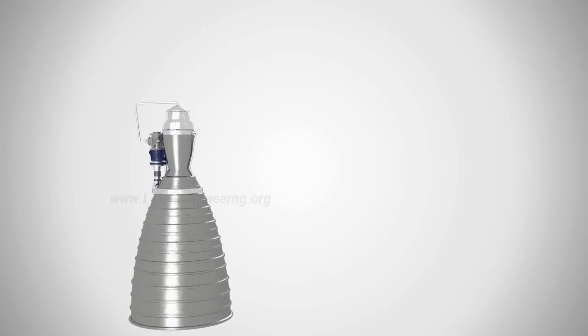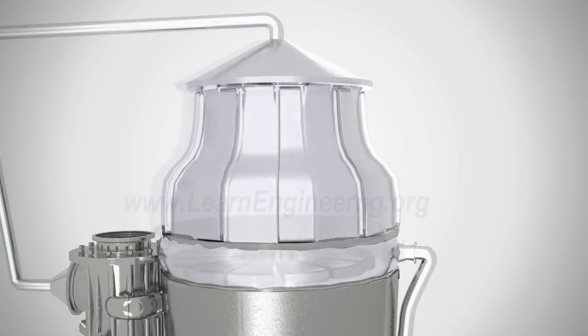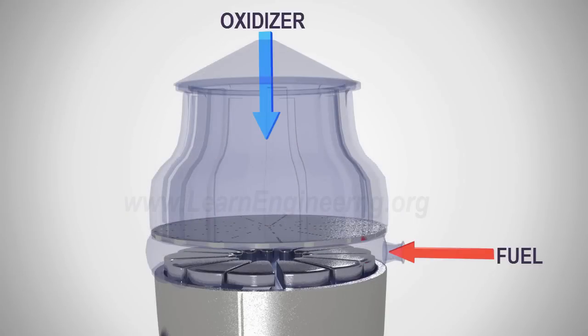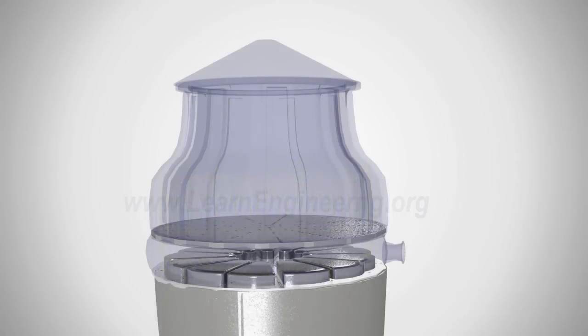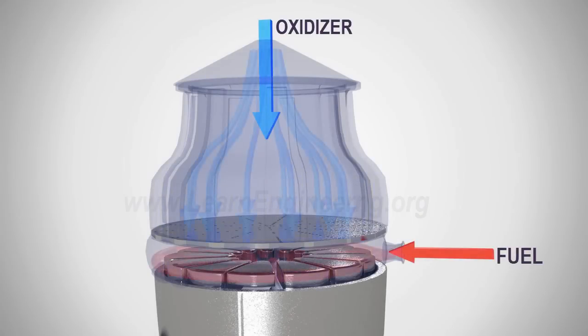To eject the high speed mass from the rocket, a liquid fuel oxidizer mixture is burnt in the rocket combustion chamber. The combustion chamber also helps the fuel and oxidizer to mix in an efficient manner due to its clever mixing design.